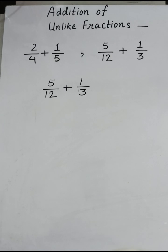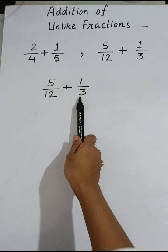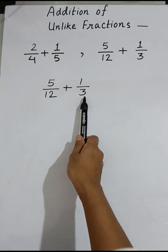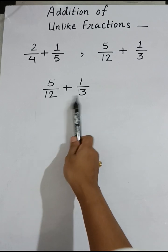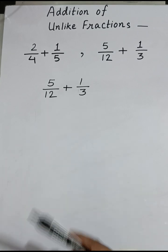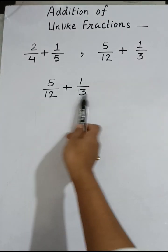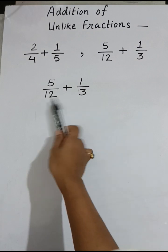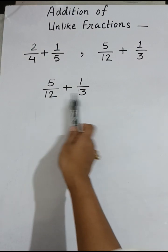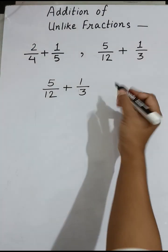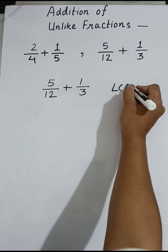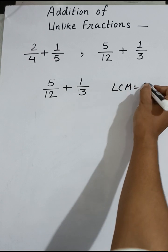Now let us move to the next question: 5/12 + 1/3. The denominators here are not consecutive numbers, so we have to find the LCM using the LCM method. The LCM of 12 and 3 is 12.